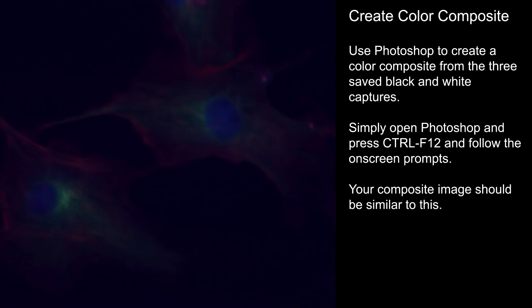Using the three black and white images you've captured of the blue, green, and red fluorescence, you can create a color composite. Simply open Photoshop and press Ctrl F12 and follow the on-screen prompts. Your composite image should be similar to this.